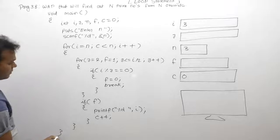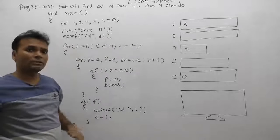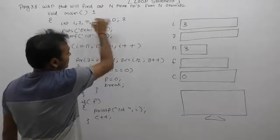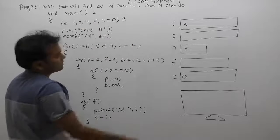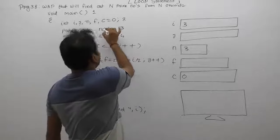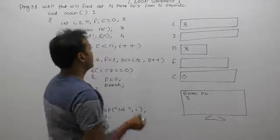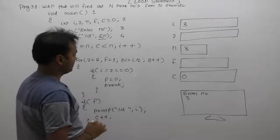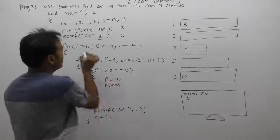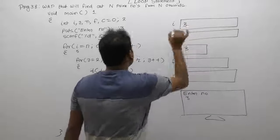Now let's trace through the complete program. We start with the main function. Variable declarations: five variables total — I, J, N, F, and C. We display a message 'enter number' and read the value, entering 3. So N's value is currently 3. The outer loop initializes I equal to N, so I is also 3. C is already 0.